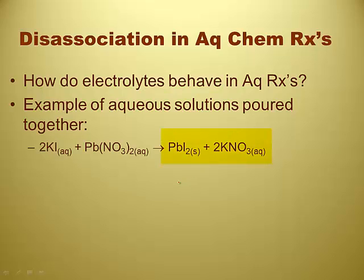You get a precipitate. You get lead iodide and potassium nitrate. Everything follows the solubility rules — I see the potassium, I see the nitrate, then I see the exception to the iodide rule. This is just our typical double replacement reaction, balanced and with states of matter.